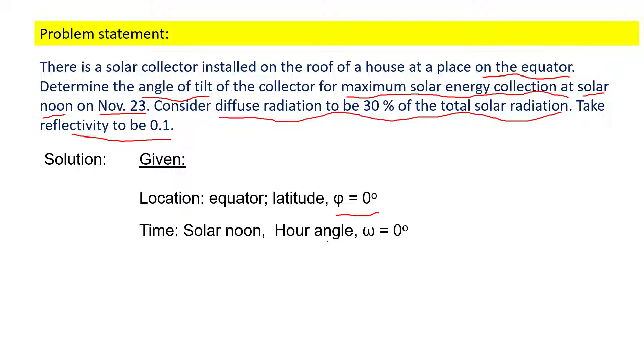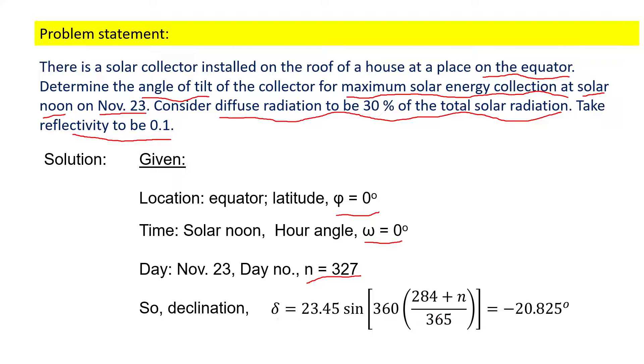Day is November 23, so the day number is 327. Therefore we can now find the declination of the day. Declination comes out to be minus 20.825 degrees.